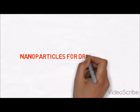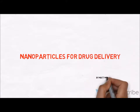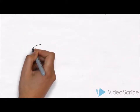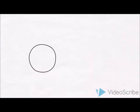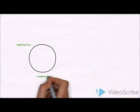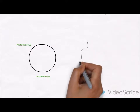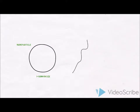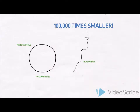Hey everyone, my name is Matt, and I'm here to tell you about nanoparticles for drug delivery. But first, what's a nanoparticle? A nanoparticle is exactly what it sounds like — it's a small particle about 1 to 100 nanometers in size. Just to give you an idea, if this is a piece of human hair, a nanoparticle is about 100,000 times smaller than the tip right there. So it's pretty small.